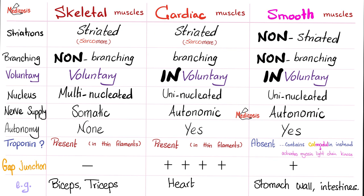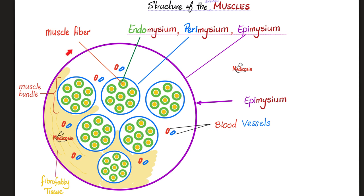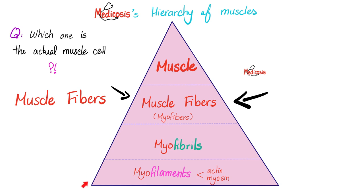This is a comparison table among the three types of muscles — pause and review. When it comes to smooth muscles, everything is no, but calmodulin. The muscle fiber is surrounded by an endomysium, then perimysium, then epimysium. Of this lovely hierarchy, where's the actual muscle cell? It's the muscle fiber.